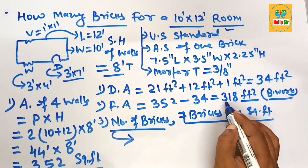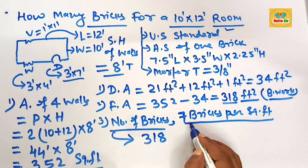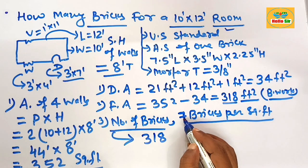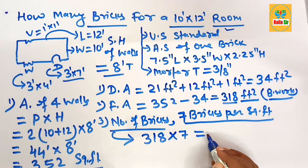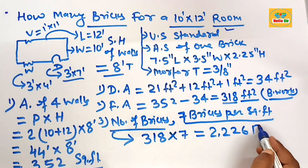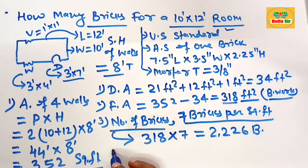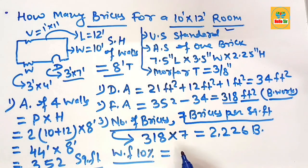Add a waste factor of about 10% for bricks damaged during transportation, installation, and storage. 10% of 2,226 is about 223 bricks. Adding this: 2,226 + 223 = approximately 2,450 bricks.